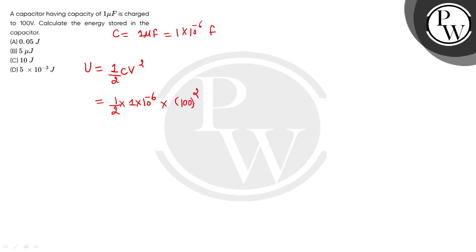So, 100 square will come. Half into 10 power minus 6 into 100 square is 10 power 4. 10 power minus 6 into 10 power 4 is 10 power minus 2 divided by 2.